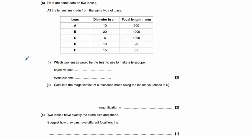The next part of this question gives us some data on some lenses. It tells us the diameter of five lenses and the focal length of a lens. Remember that the focal length is the distance from the lens to the focal point.